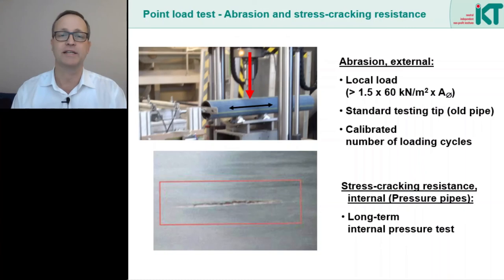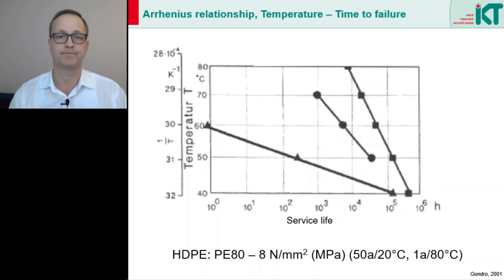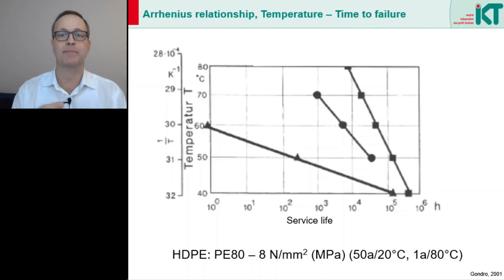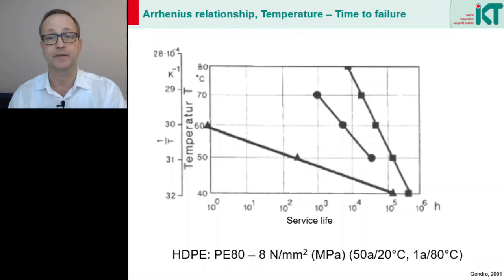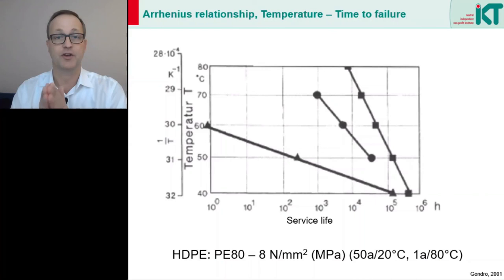The internal pressure creep rupture test is the classic test for testing thermoplastics. We can see on an example diagram how service life decreases at high temperatures. Plastics are also classified in this way. PE-80, for example, is a high density polyethylene material that can withstand 8 MPa tensile stress over 50 years at 20 degrees Celsius. To avoid every material test having to last 50 years, tests are carried out at higher temperature, namely 80 degrees Celsius. So the following applies: if the material can withstand the nominal stress of 8 MPa at 80 degrees for one year, then it can be assumed that it can also do so for 50 years at 20 degrees.